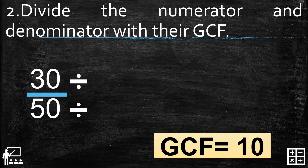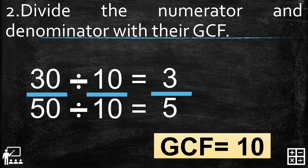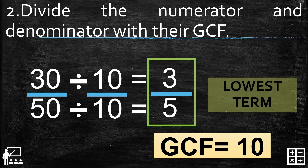Let's proceed to step 2: divide the numerator and denominator by their GCF of 10. 30 divided by 10 and 50 divided by 10 gives you 3 over 5. So the lowest term of 30 over 50 is 3 over 5.